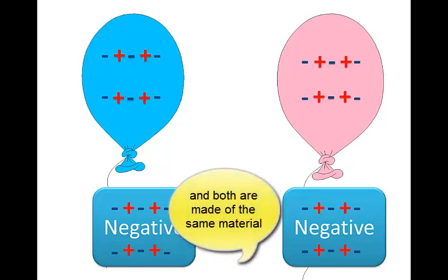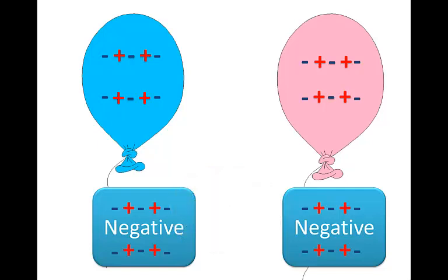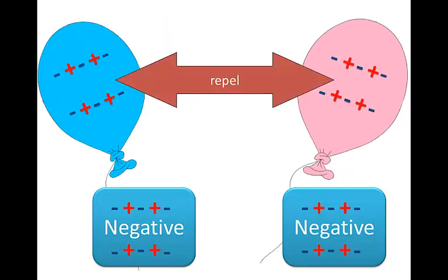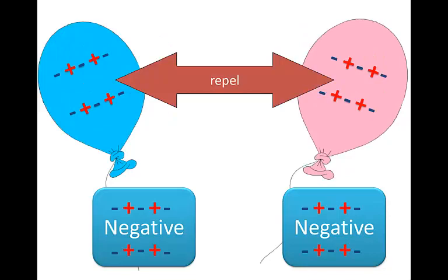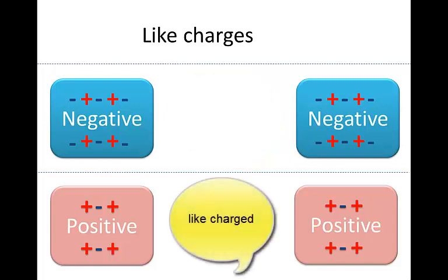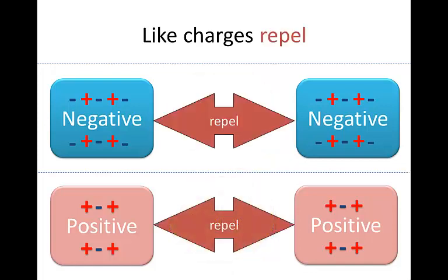So perhaps this material that you rub them with holds its electrons looser than the balloon. Then the balloons will both end up negatively charged. Two negatively charged balloons will also repel one another. Negative and negative are the same as one another. We can say they are like charges. Positive and positive are also like charges. And like charges repel one another.